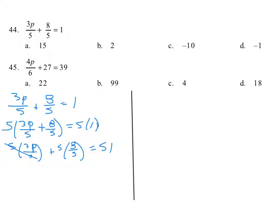Now, what we can do is we can cancel those 5s and get 3p equals, we can cancel those 5s, sorry, not equals, but plus, we can cancel those 5s and get 8.